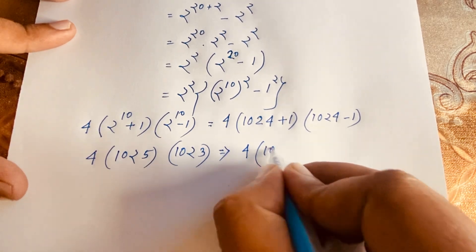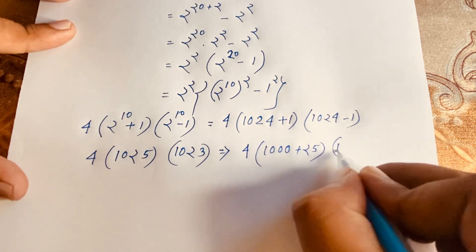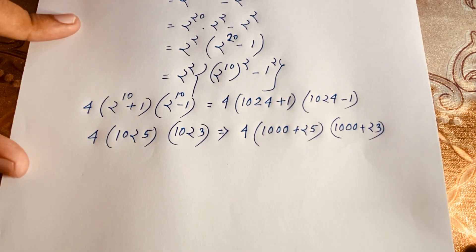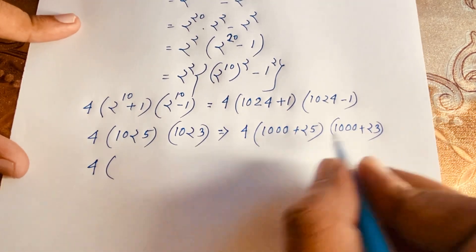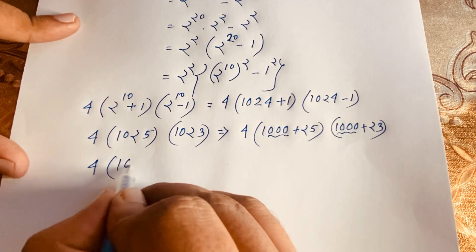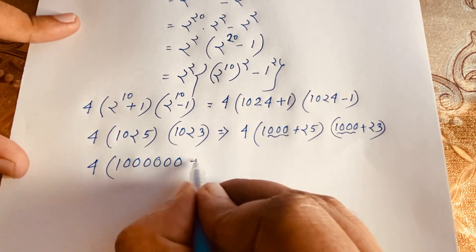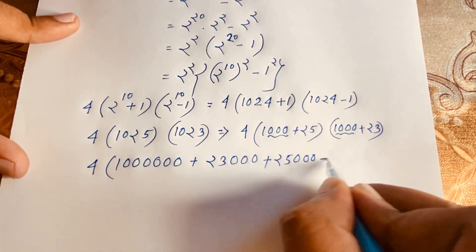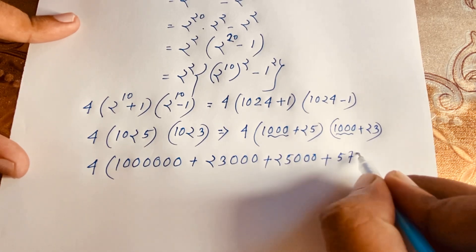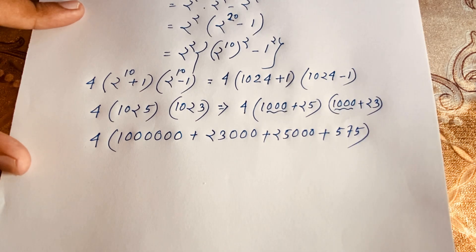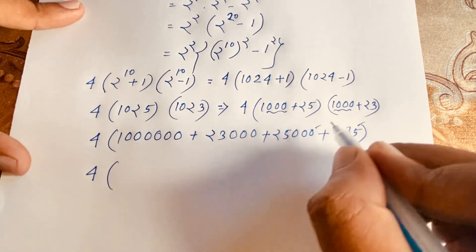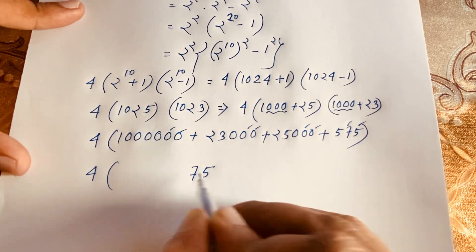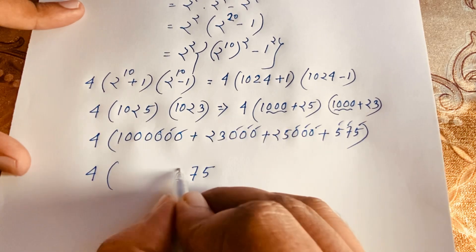Now let's multiply this out. 1025 times 1023 — we can write 1025 as 1000 plus 25 and 1023 as 1000 plus 23. Multiplying: 1000 times 1000 is 1,000,000; 1000 times 23 is 23,000; 25 times 1000 is 25,000; and 25 times 23 is 575. Adding these gives 1,048,575, and then multiplied by 4 gives our final answer.